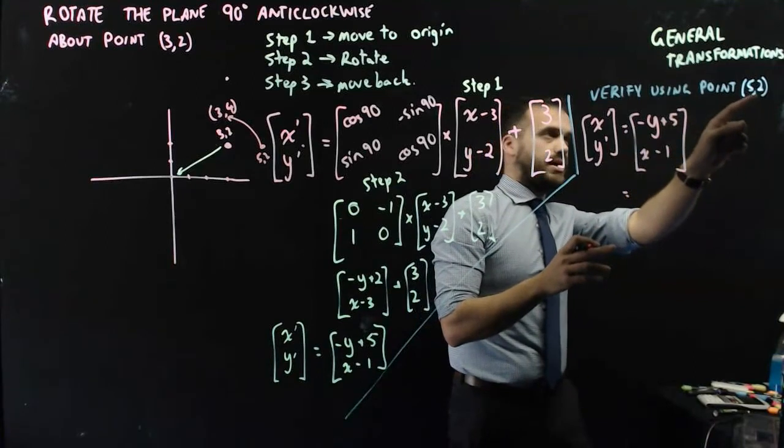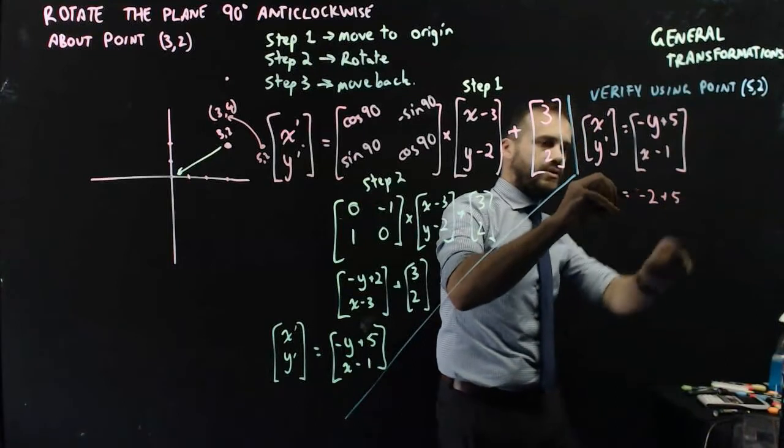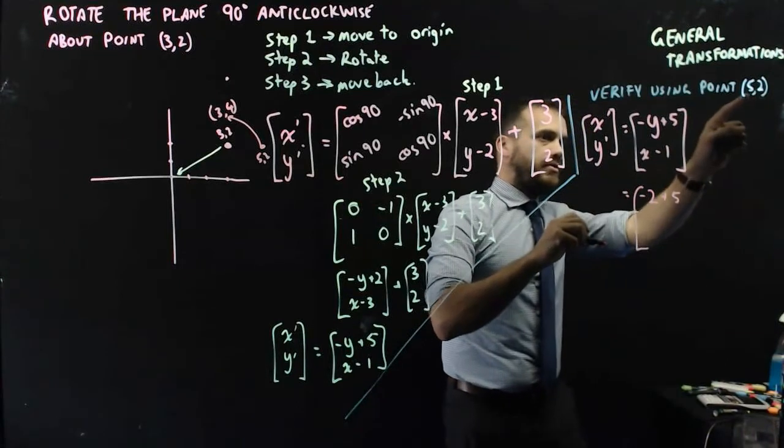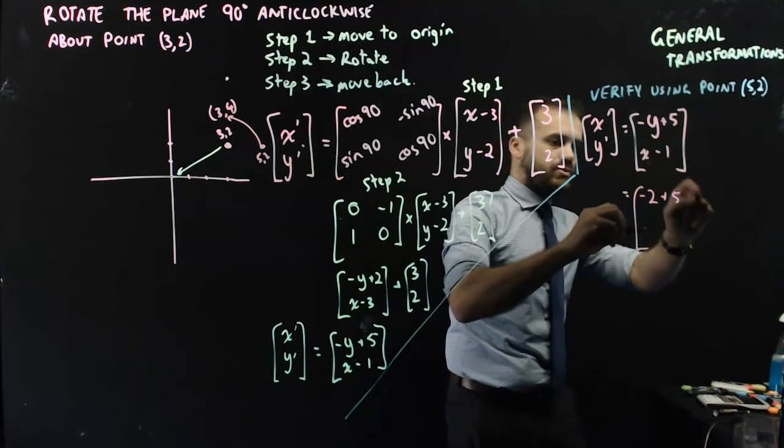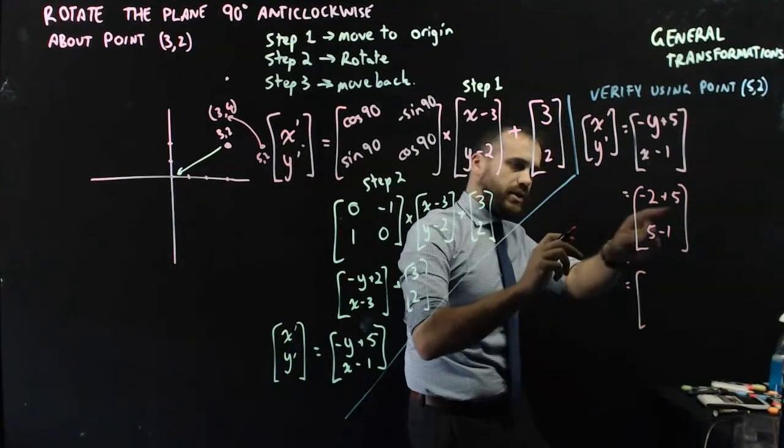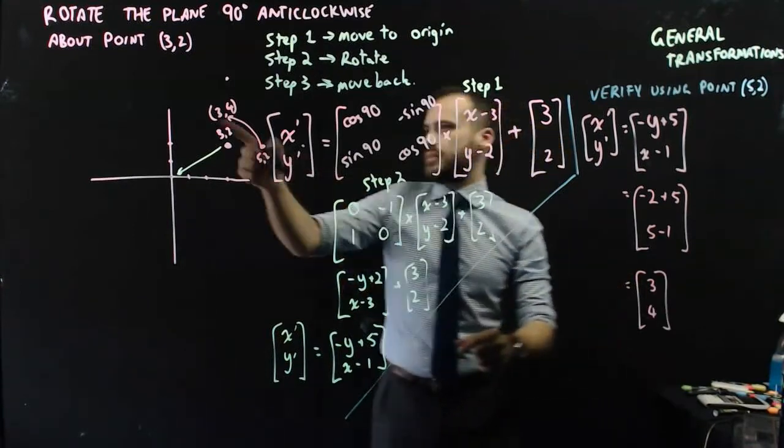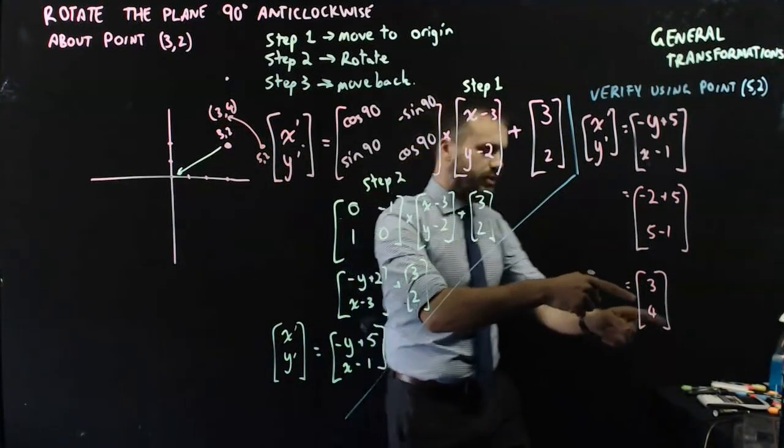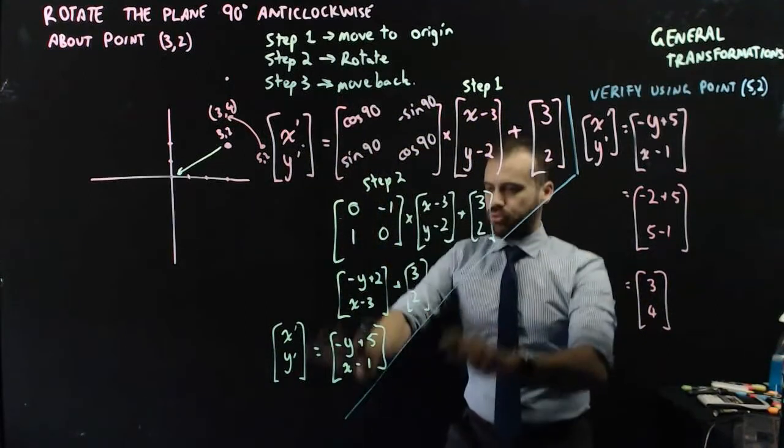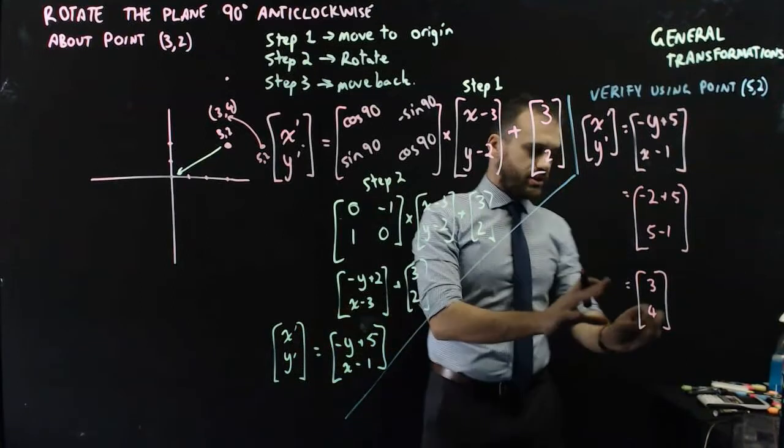So subbing in negative 2 plus 5, subbing in 5 minus 1. And I'll get an image of negative 2 plus 5 is 3, 5 minus 1 is 4—(3, 4). That means that I've probably done my work correctly. It seems unlikely that I've just fluked that.